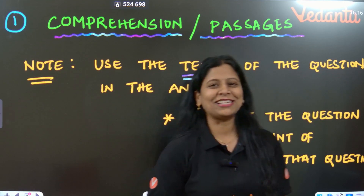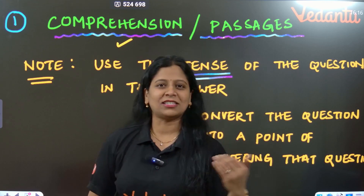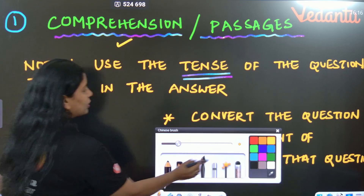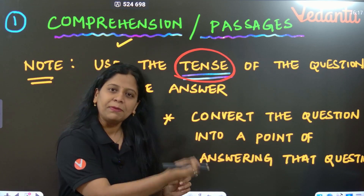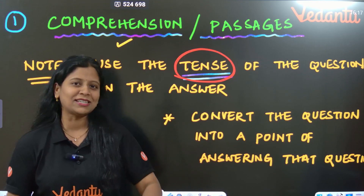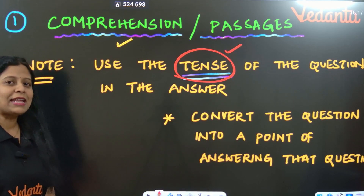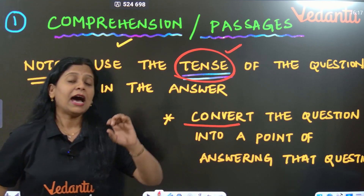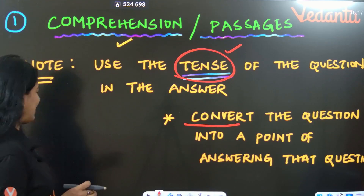Coming to the English paper presentation: for passages or comprehension, the answers should be written in the same tense as the question. If it is asked in past tense, write your answer in past tense. If the question is in present tense, write your answer in present tense. Don't change the tense of the question — whatever tense is used in the question, use that same tense in the answer. You can also convert the question into a point to use as the starting of your answer.